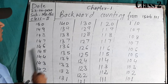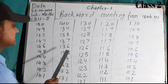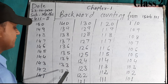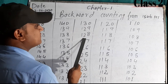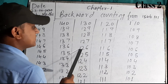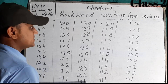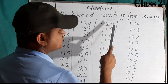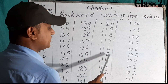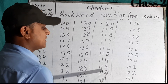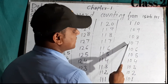139, 138, 137, 136, 135, 134, 133, 132, 131, 130, 129, 128, 127, 126, 125, 124, 123, 122, 121, 120, 119, 118, 117, 116, 115, 114, 113, 112, 111, 110, 109, 108, 107.